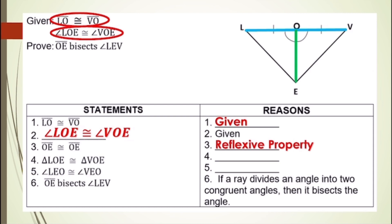For our fourth statement, we have triangle LOE is congruent to triangle VOE. The reason for our fourth statement is by SAS postulate, because the included angle here is angle OE. And for our fifth statement, we have angle LEO is congruent to angle VEO. The reason is by CPCTC.